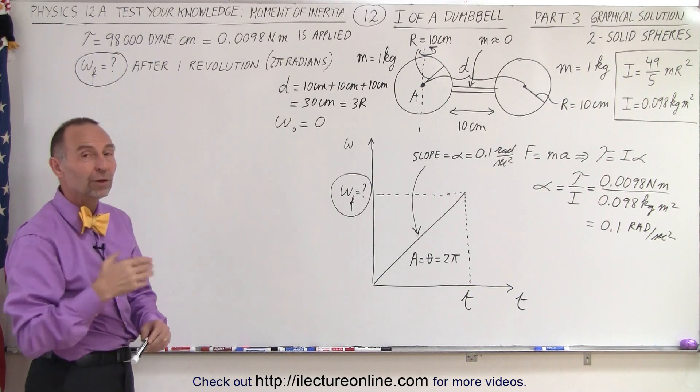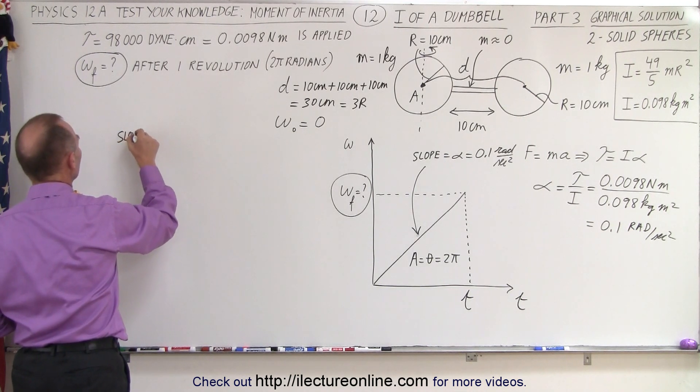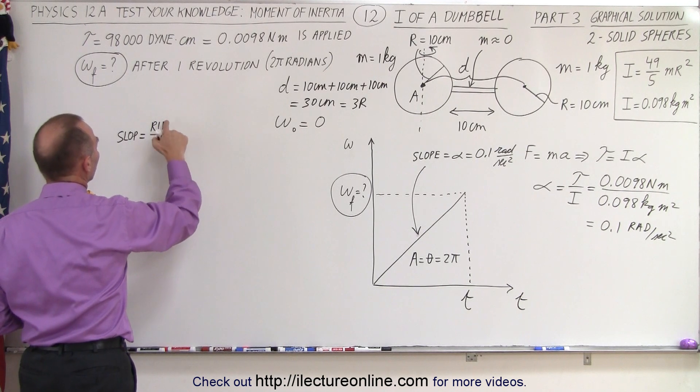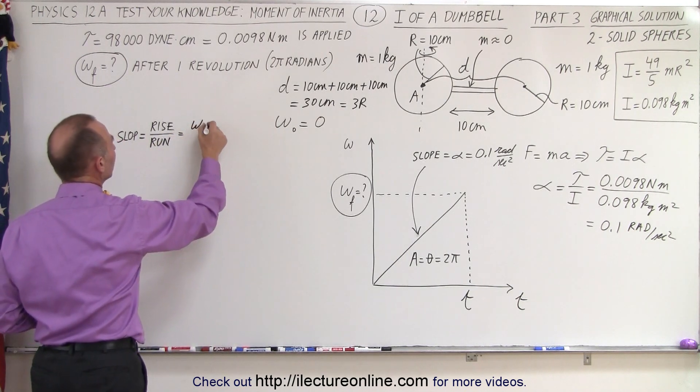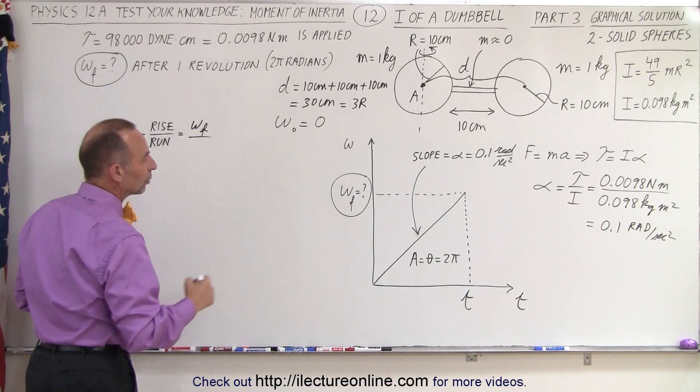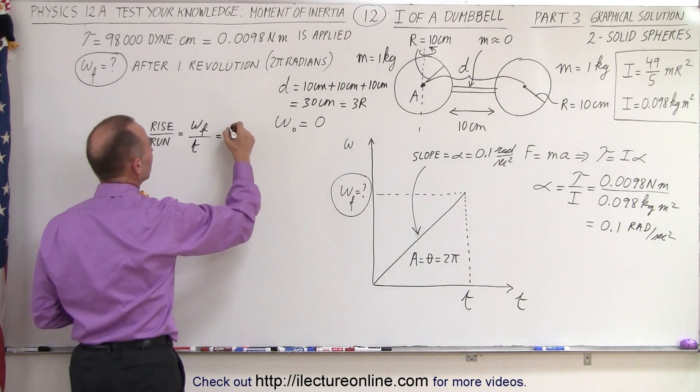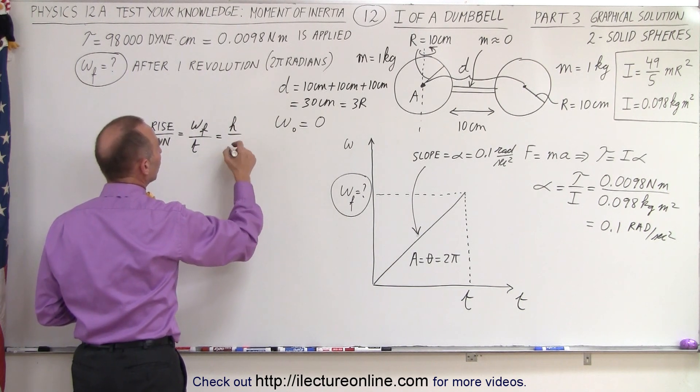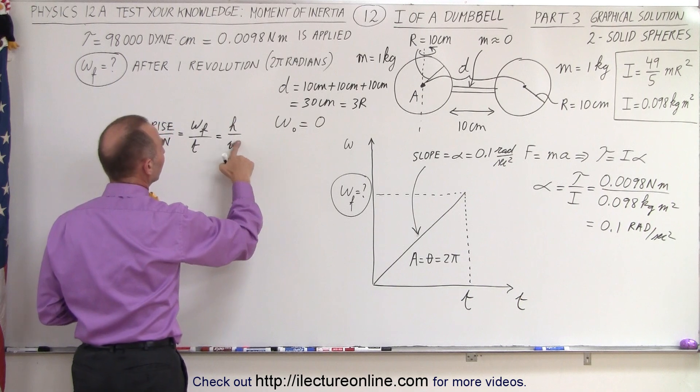So, first of all, let's write down the definition of the slope. The slope, by definition, is equal to the rise over the run, which in this case is the omega final divided by the run, which is t. So, in essence, omega final would be the height, and t would be the base of the triangle.